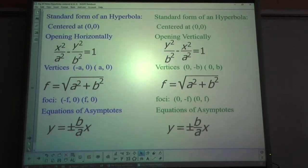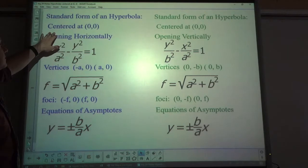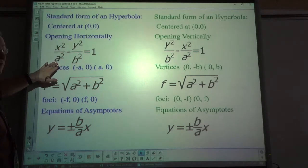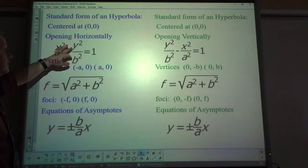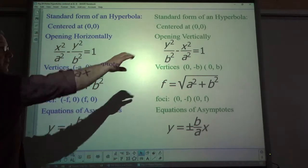Welcome. Today we are going to work with hyperbolas centered at 0, 0. So, first thing you need to know, if a hyperbola is centered at 0, 0, and it's in this form, x squared over a squared minus y squared over b squared equals 1, we're talking a horizontal opening.